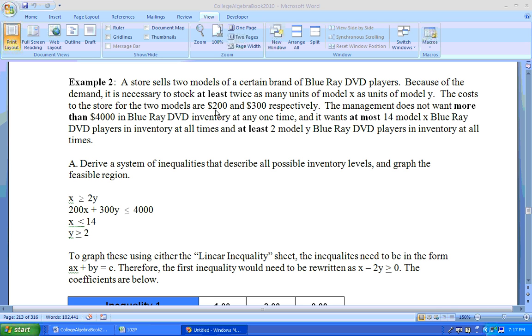$200 times each of the X ones plus $300 times each of the Y ones has to be less than or equal to, because it says it does not want more than $4,000 in Blu-ray DVD inventory. So that means less than or equal to $4,000.